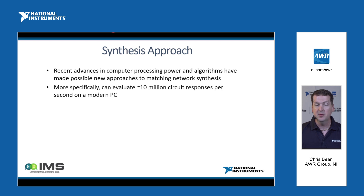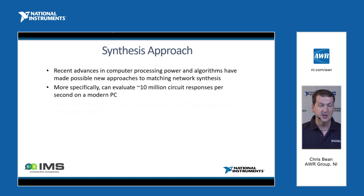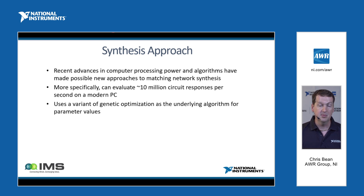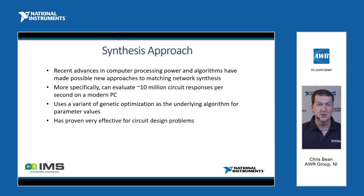More specifically, a modern PC can evaluate roughly 10 million circuit responses per second, and we take full advantage of that. For the parameter value optimization, we use a variant of a genetic optimization algorithm that's been developed over the past decade plus, so it has some history behind it, and it is very effective for circuit response type problems.